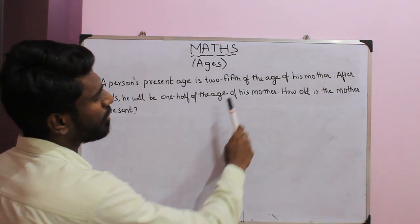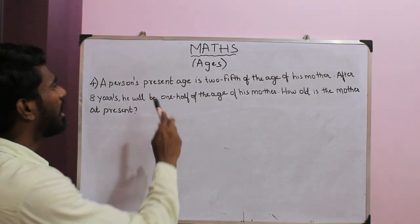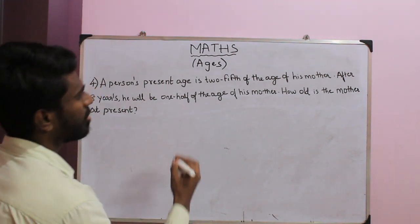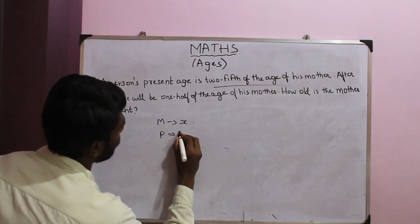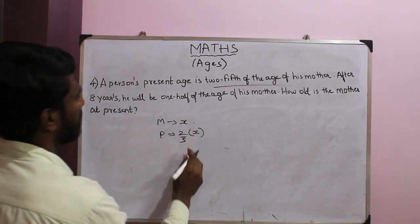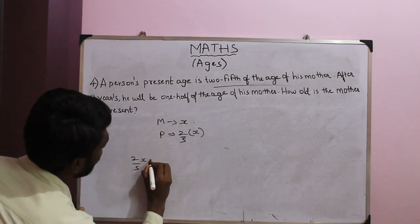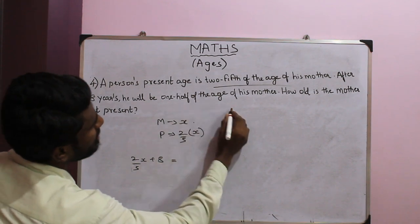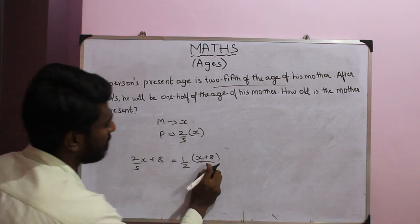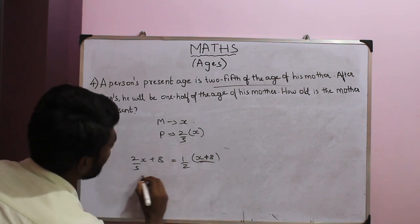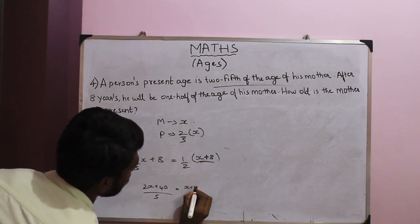Problem 4: A person's present age is 2/5th of the age of his mother. After 8 years, he will be half the age of his mother. How old is the mother now? Let the mother's present age be x. Then the person's present age is 2x/5. After 8 years, person's age is 2x/5 plus 8 and mother's age is x plus 8. The equation is: 2x/5 plus 8 equals (x plus 8)/2, giving the general equation 2x plus 40 divided by 5 equals x plus 8 divided by 2.